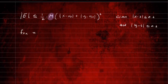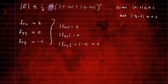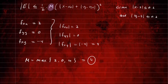The second partial f_xx: taking the partial of f with respect to x twice gives us 2. The second partial f_yy gives us 0. The mixed partial f_xy gives us -4. Taking absolute values: |f_xx| = 2, |f_yy| = 0, |f_xy| = 4. M is going to be the maximum of these numbers — the maximum of 0, 2, and 4 — which is 4. So M = 4.